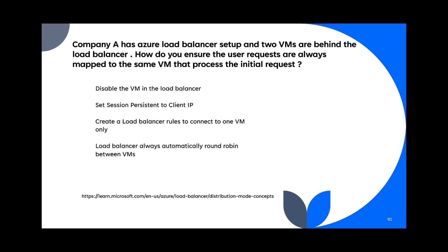Question 91: Company A has an Azure load balancer with two VMs behind it. How do you ensure user requests are always mapped to the same VM that processed the initial request? The load balancer by default round-robins between VMs. To keep sessions sticky, you set session persistence to client IP. The answer is: set session persistence to client IP.